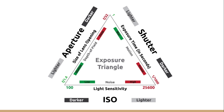The exposure triangle includes the aperture, which is the size of the lens opening — I have done a video on that — and the shutter speed, which is the exposure time in seconds, which I will cover in a couple of videos' time. ISO, which we're looking at today, is the light sensitivity, and it affects the noise of the camera.